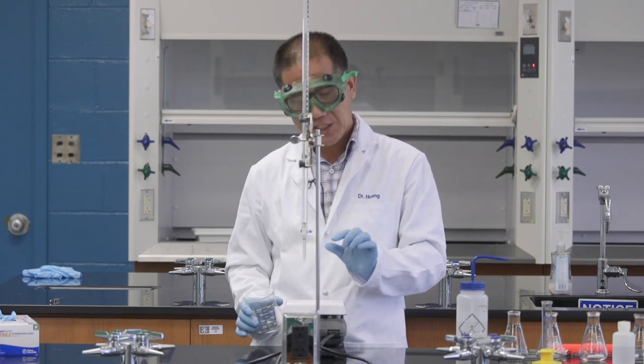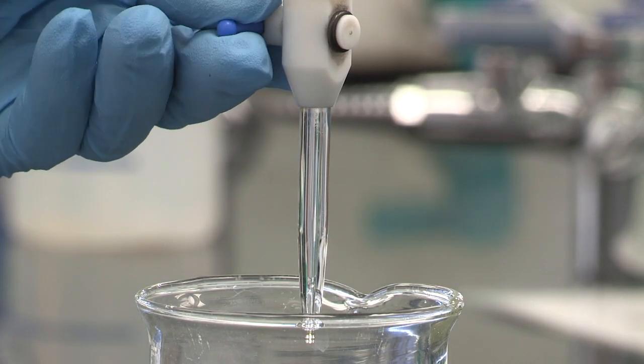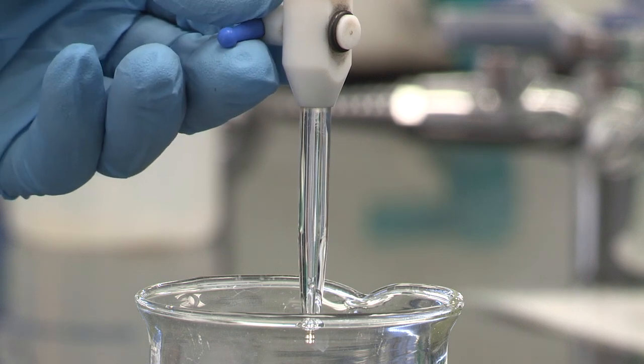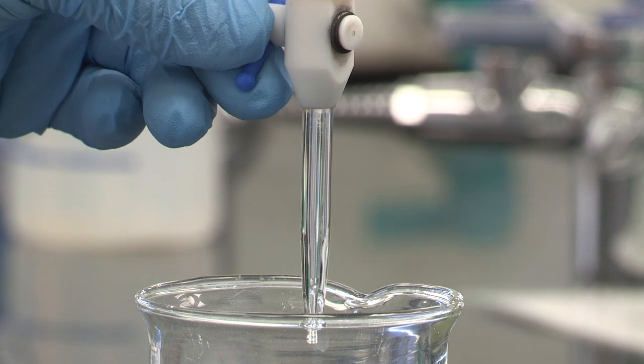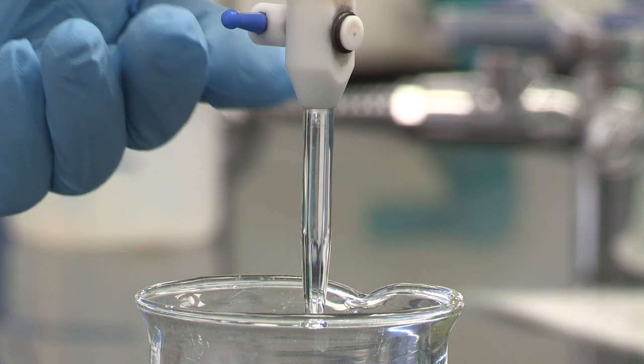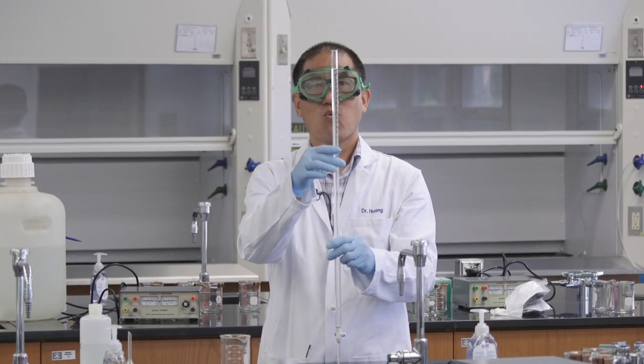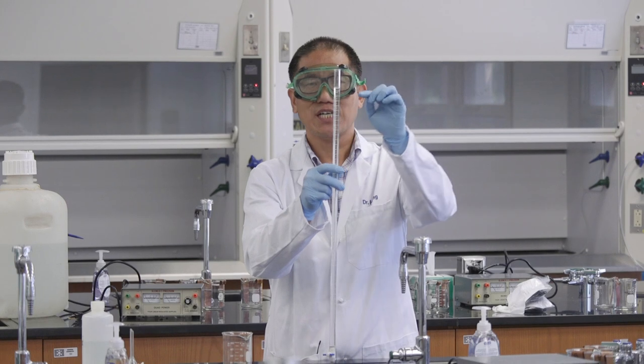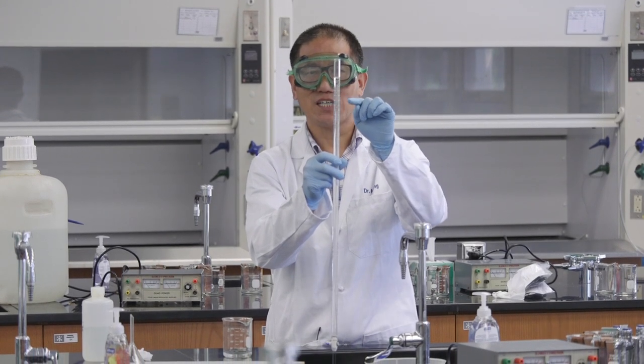And then, we have to make sure there's no bubble in this part. Let's say if you can see the bubble. Let the bubble come out. After you get rid of the bubble, what you want to do is make sure the meniscus is aligned with the zero milliliter on top.